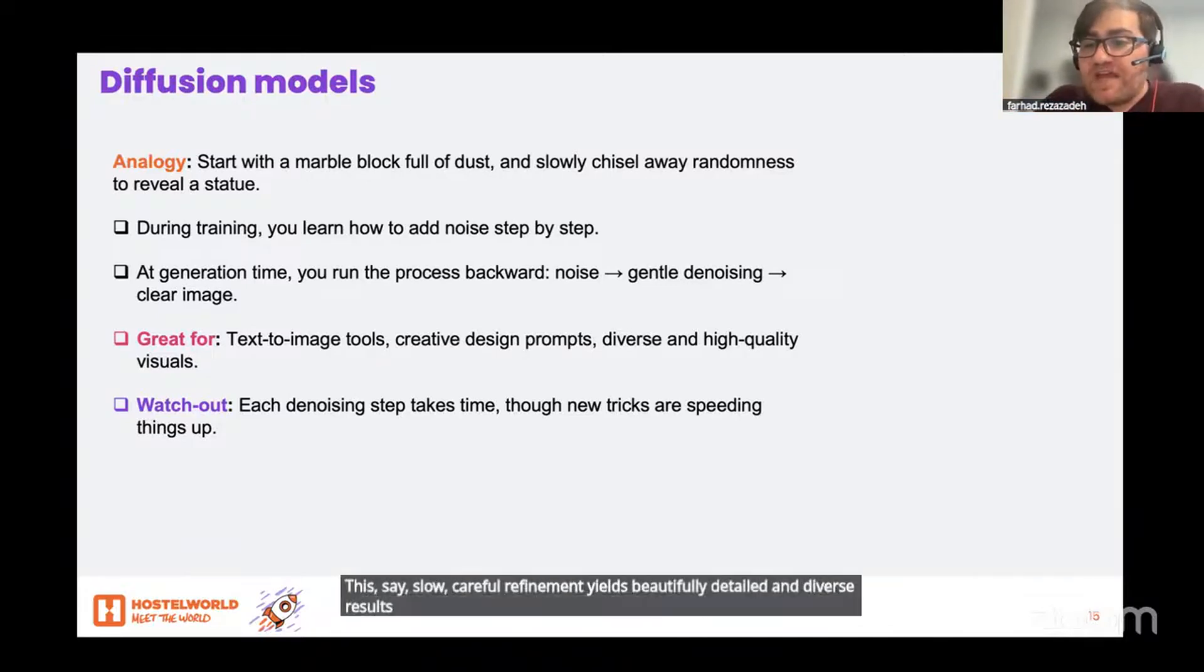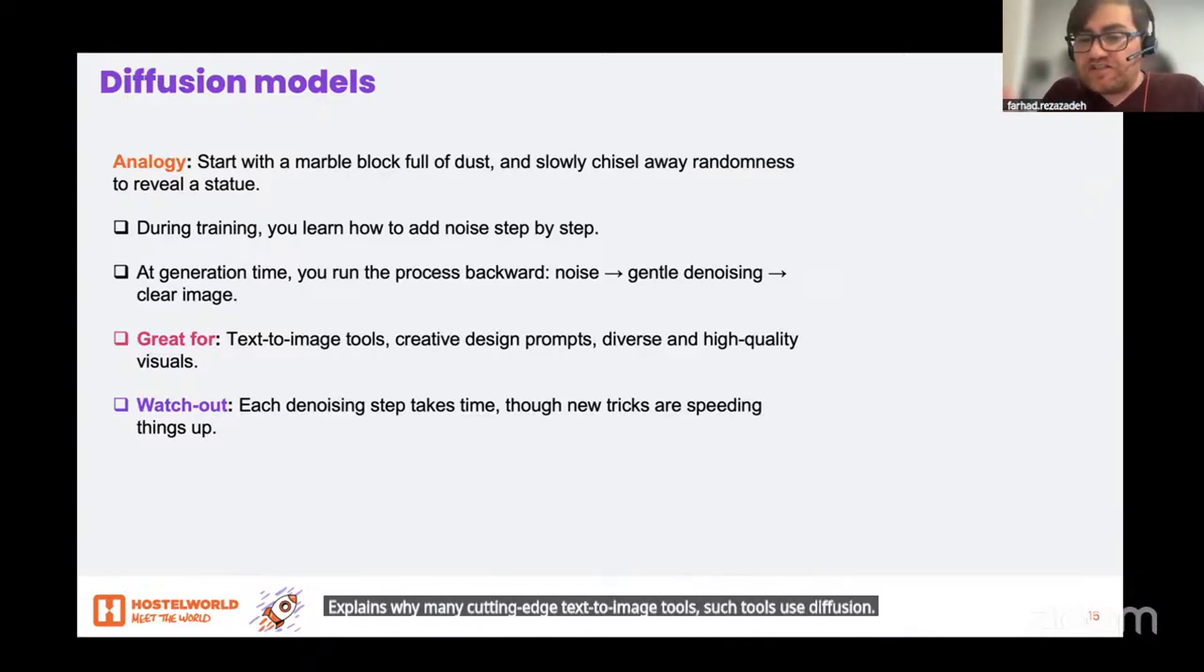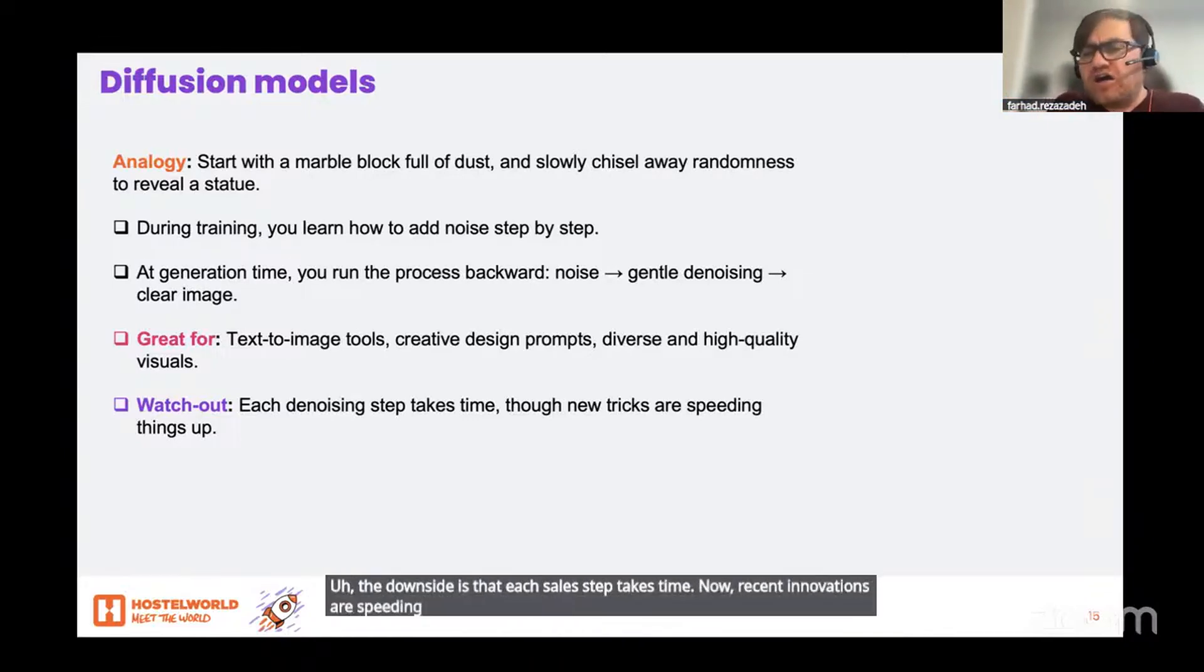This slow, careful refinement yields beautifully detailed and diverse results, which explains why many cutting-edge text-to-image tools use diffusion under the hood. The downside is that each step takes time, though recent innovations are speeding up the journey from noise to masterpiece.